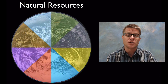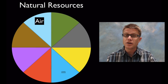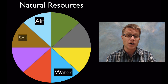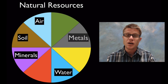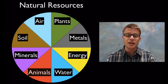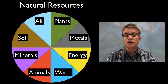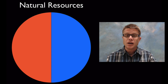There are a lot of different types of natural resources. It could be the air you breathe, the water you drink, the soil you grow your crops in, minerals, metals, energy, plants, animals. And all of this we're getting from our environment.